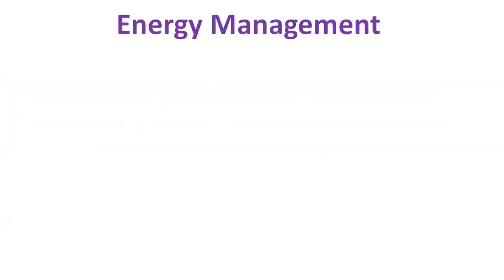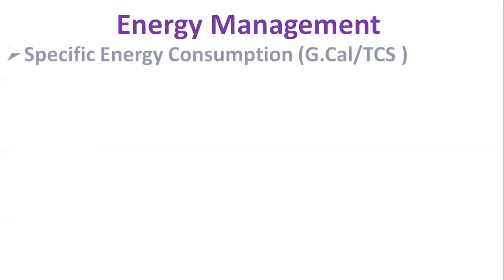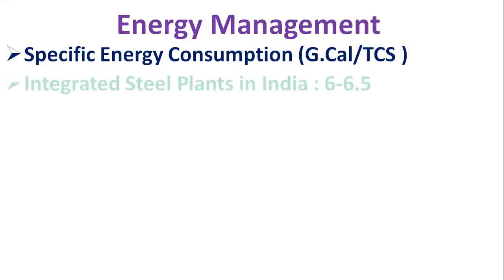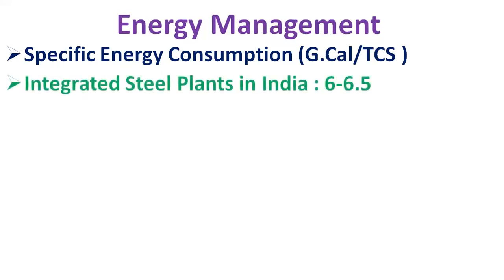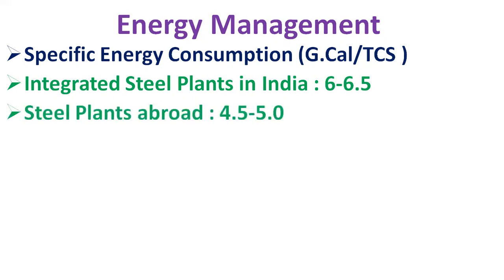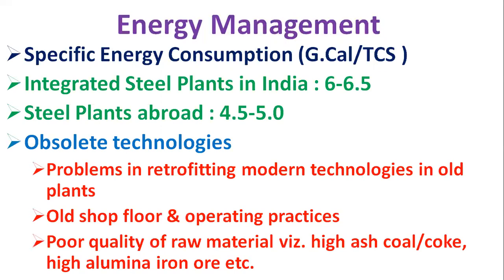Steel companies are required to install specified pollution control equipment and operate within prescribed standards for air, water, and noise pollution, as well as solid waste generation and utilization. These are monitored by the Central and State Pollution Control Boards. Regarding energy management, energy consumption in most integrated steel plants in India is generally high at 6 to 6.5 gigakalorie per ton of crude steel, compared to 4.5 to 5 in steel plants abroad.